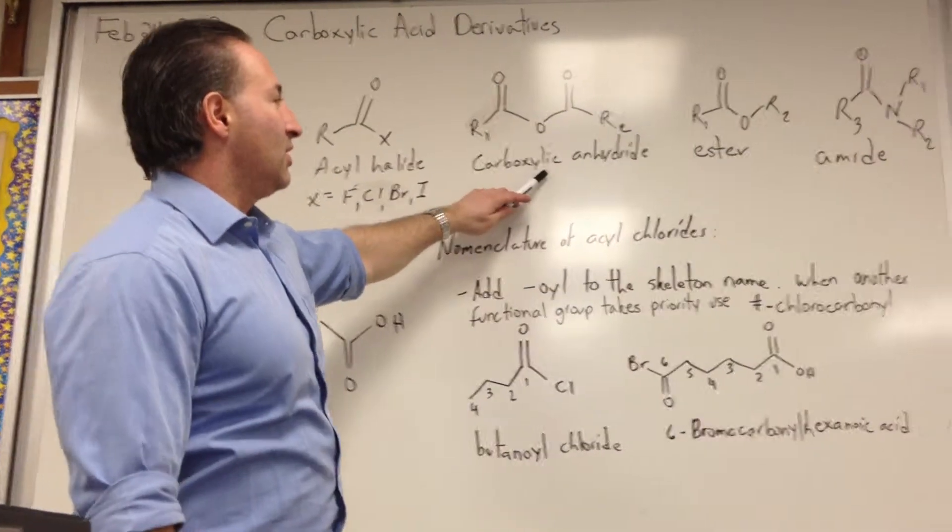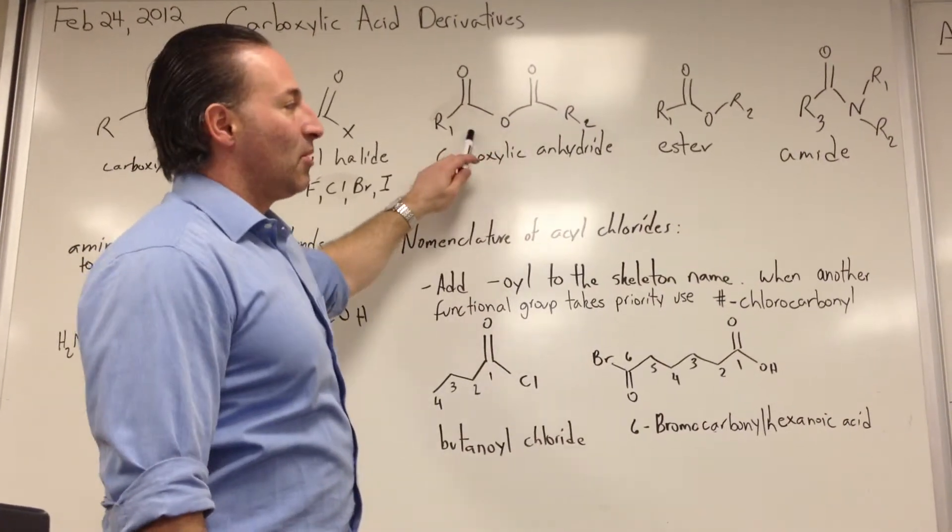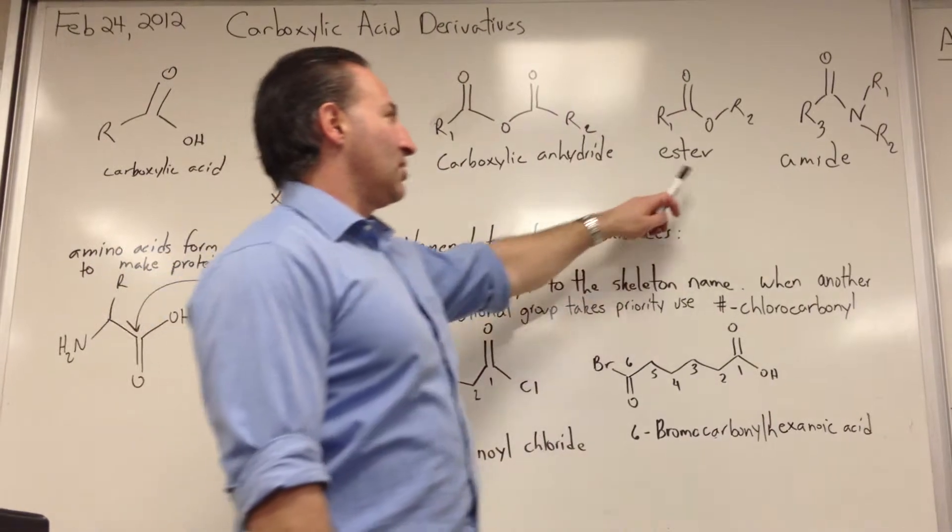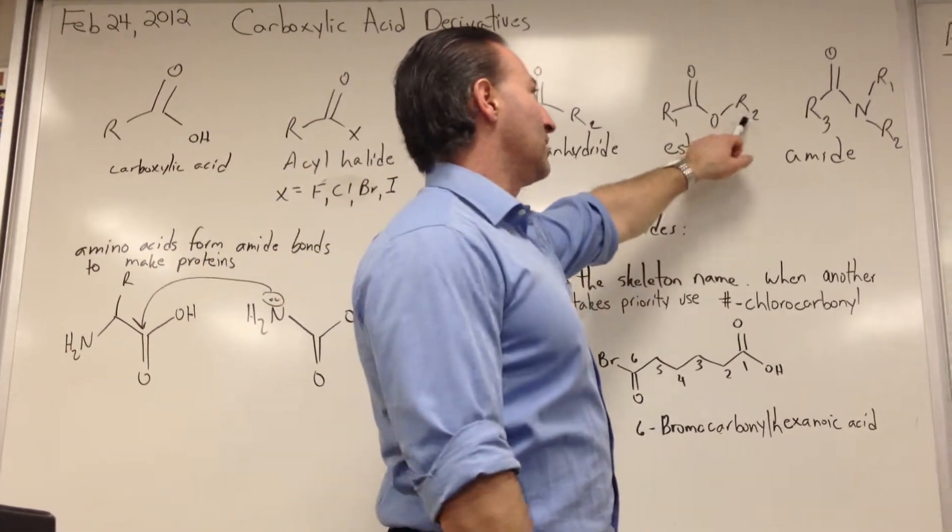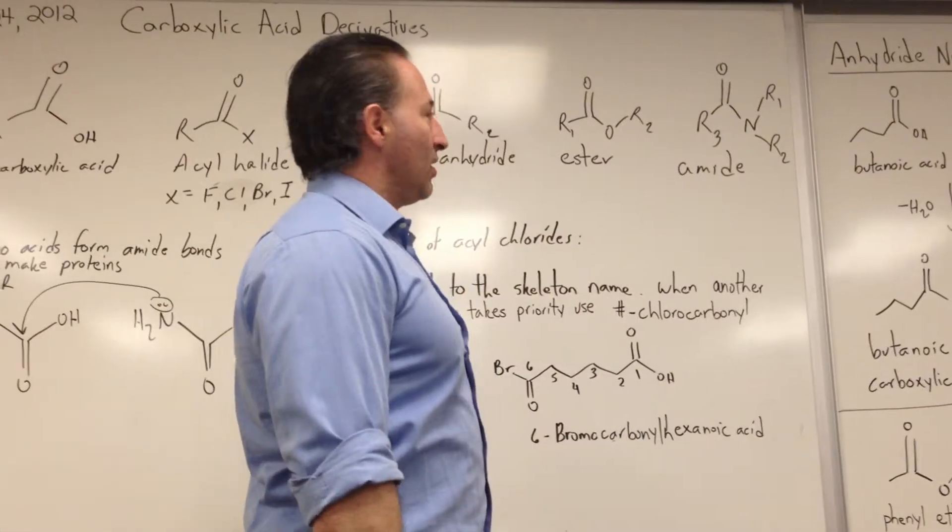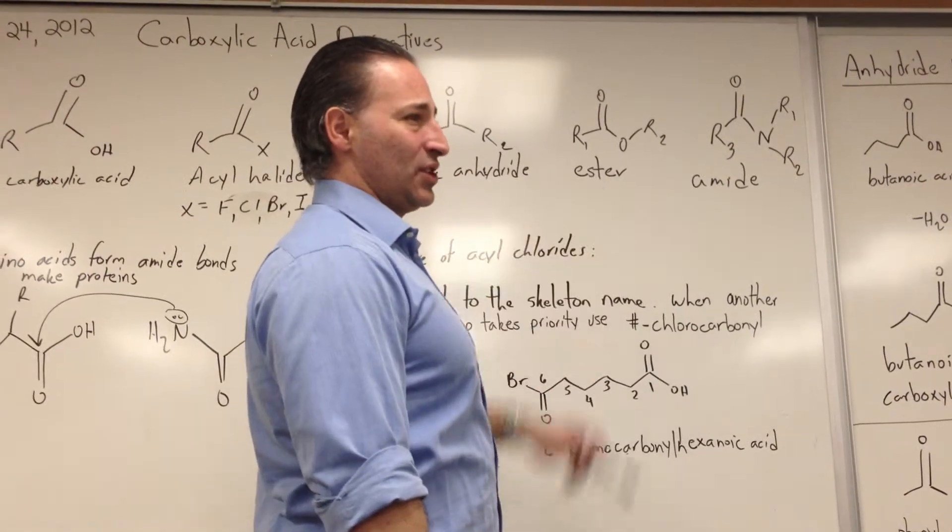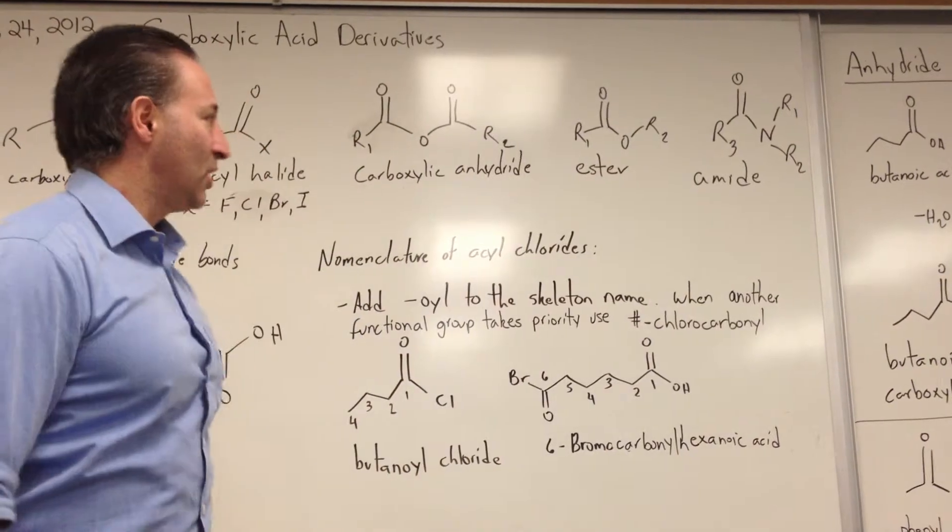Carboxylic anhydrides are the result of reacting two carboxylic acids and removing water to form the anhydride. Esters are made by combining an alcohol with a carboxylic acid. Esters are used as flavoring agents and in perfumery.